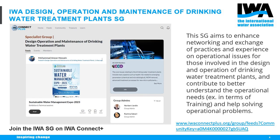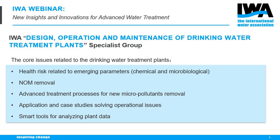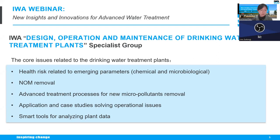I will briefly introduce the IWA Specialist Group on Design, Operation, and Maintenance of Drinking Water Treatment Plants. This specialist group aims to enhance networking and exchange of practices and experience on operational issues, and to contribute to better understanding of operational needs and solving operational problems. Topics include health risks related to emerging parameters, NOM removal, advanced treatment processes for micropollutant removal, application and case studies, and smart tools for analyzing data.